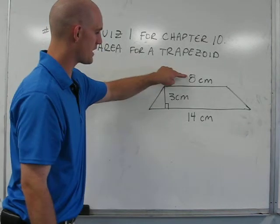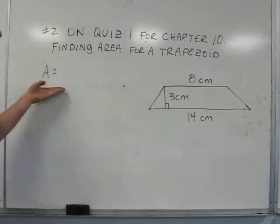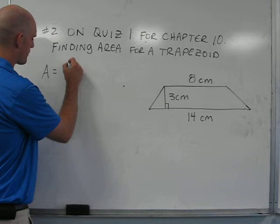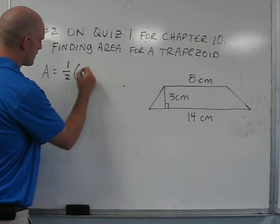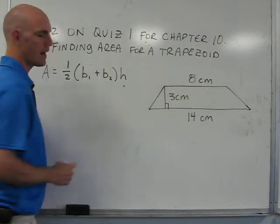So knowing those three things - base one, base two, and the height - we can calculate the area. The area for a trapezoid is represented by the formula one half, base one, plus base two, times the height.